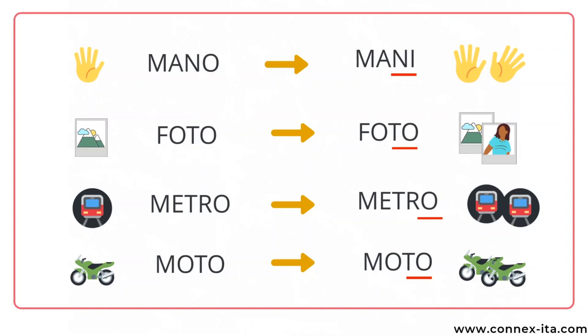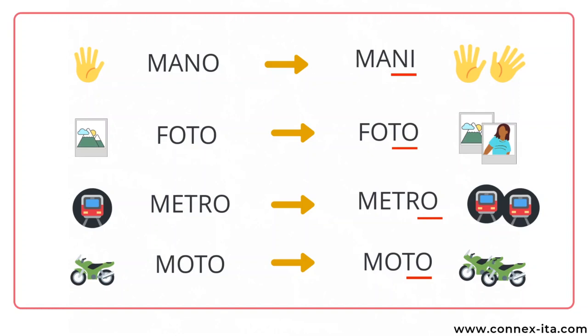Let's go ahead with other examples. There are not many feminine words ending with an O, but these ones are pretty common. Mano is 'the hand' and in the plural becomes mani, mani.